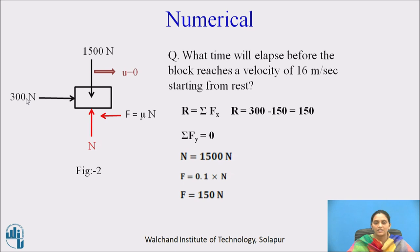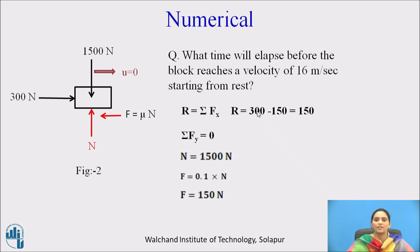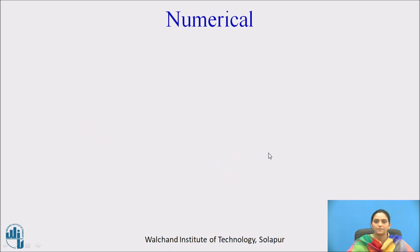In the X direction, there are two forces: 300 N and the frictional force of 150 N. The resultant is the summation of forces in X, so resultant = 300 minus 150 = 150 N.